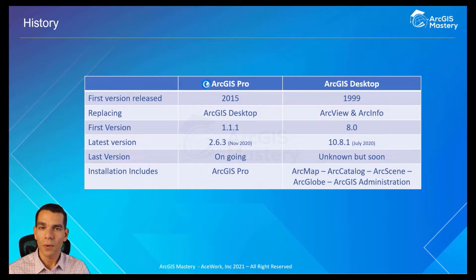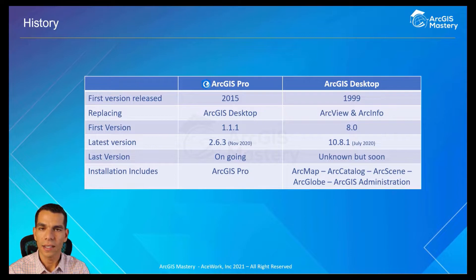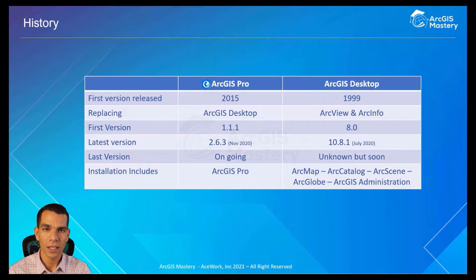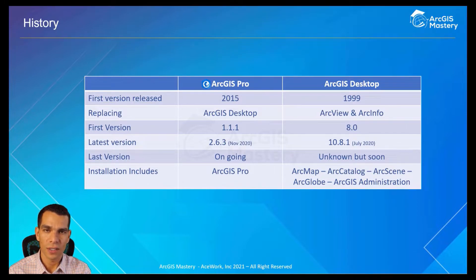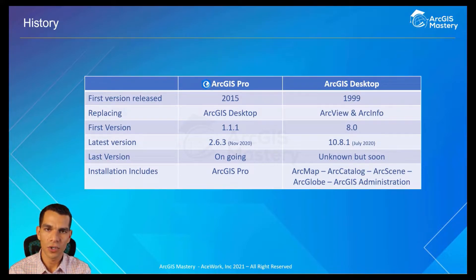ArcGIS Desktop — the first release was in 1999, and it was version 8.0. It came to replace ArcInfo and ArcView, which are really old versions of Esri applications that are not in use anymore. The last ArcGIS Desktop version is 10.8.1, and it was released in July 2020. This is the version we are using in our course.